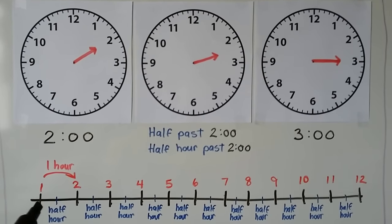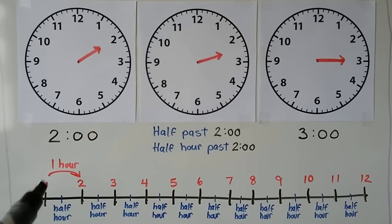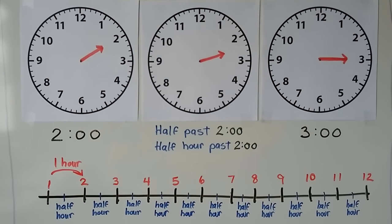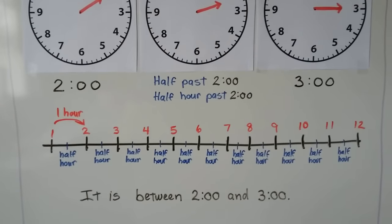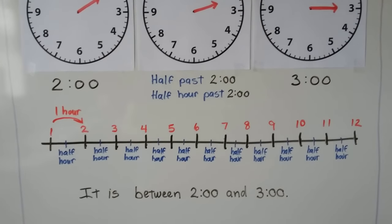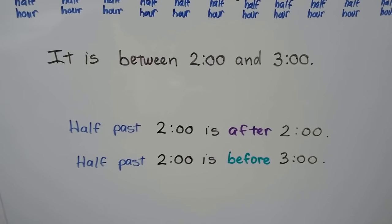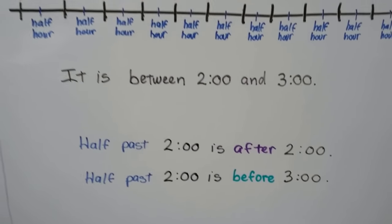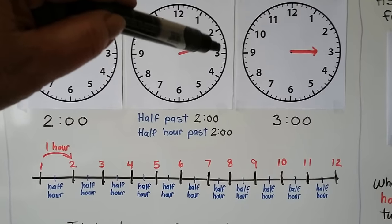In between each hour, right in the middle, is a half hour. In between each number is one hour, and in the middle of them is a half hour. If it's between two o'clock and three o'clock, it's half past two o'clock. Half past two o'clock is after two o'clock but before three o'clock — so it's after two but hasn't become three yet.